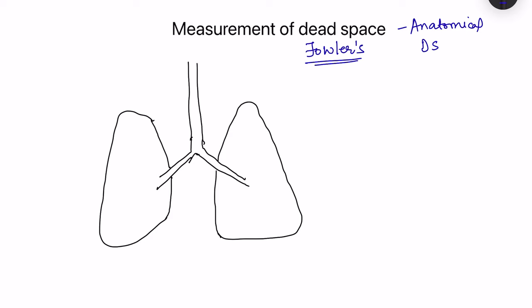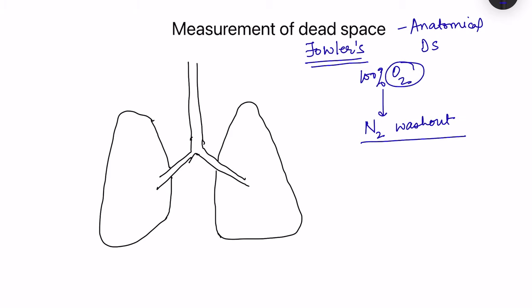Fowler's method is a technique in which the person takes a single breath of 100% oxygen — not inhaling air but inhaling oxygen — and after that exhales completely as much as possible, and we measure the amount of nitrogen washout. We are inhaling oxygen and measuring the nitrogen concentration in the exhaled air. Normally we inhale atmospheric air, which is around 79% nitrogen and 21% oxygen.